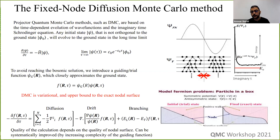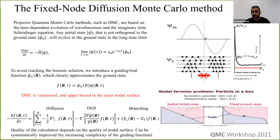We enforce antisymmetry by not allowing moves where an electron's new position changes the sign of the wave function — the move is rejected. This is the fixed node approximation. Without it, all electrons would collapse to the same state — the bosonic solution. If the nodal surface position is exact, the wave function is exact and our energy will be exact. Because diffusion Monte Carlo is variational, any deviation from the exact nodal surface will only raise the energy.